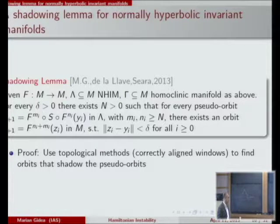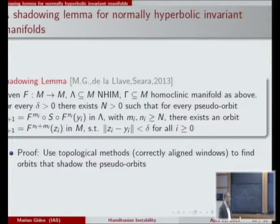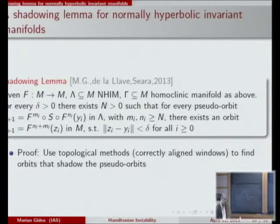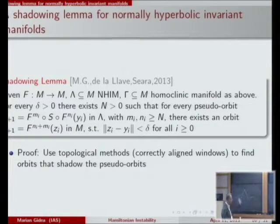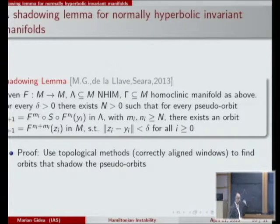To prove this one can use topological tools, for example correctly aligned windows — a version of Conley index theory. The strong assumption is that you must first be able to find such a pseudo-orbit. Once found, you can find a true orbit nearby.